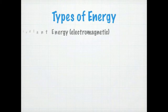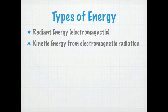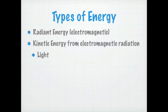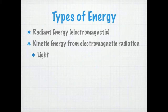The next type is called radiant energy, also called electromagnetic energy. That's kinetic energy from electromagnetic radiation. It's kind of hard to picture things like sunlight and radiation as kinetic energy, but light actually moves through space — that's why there's a speed of light. There are very small particles, smaller than atoms, called photons, and that's the particle that transmits light.